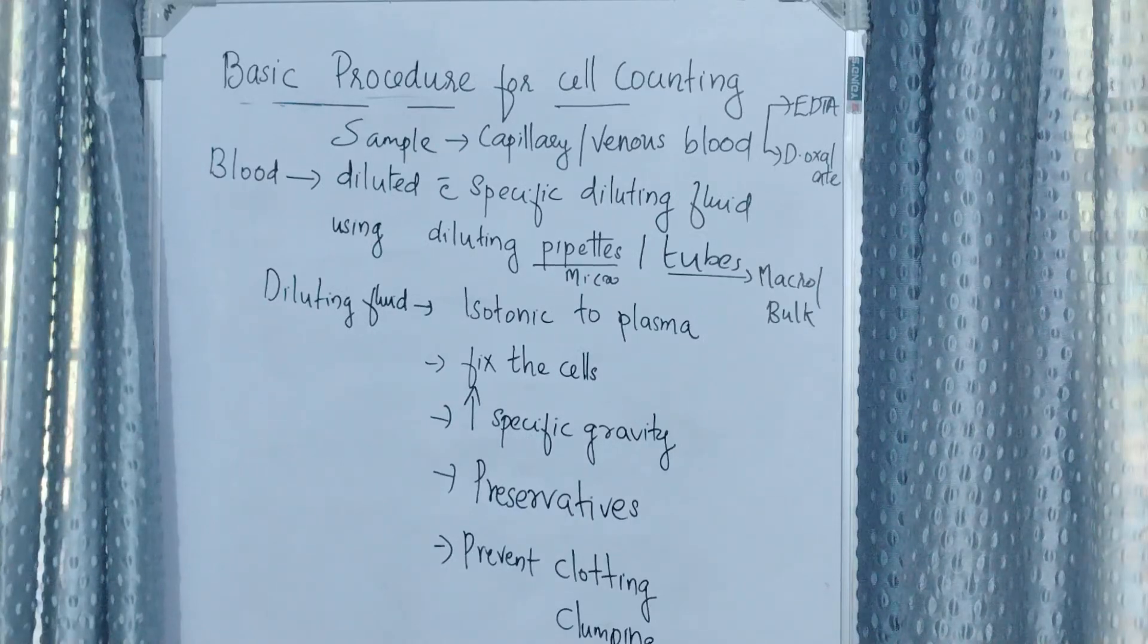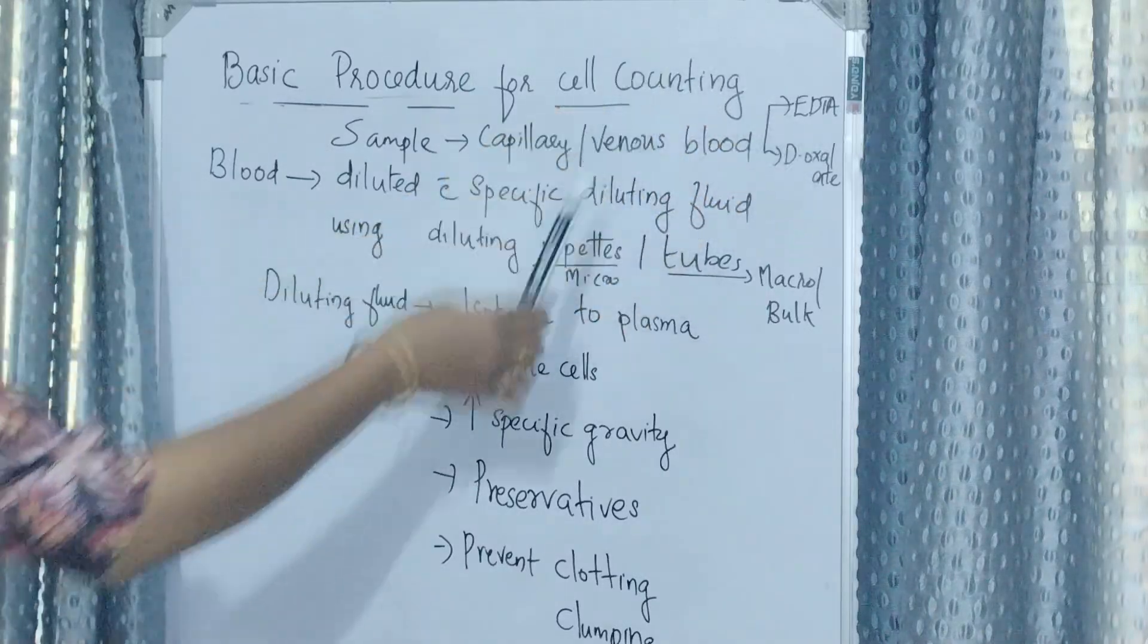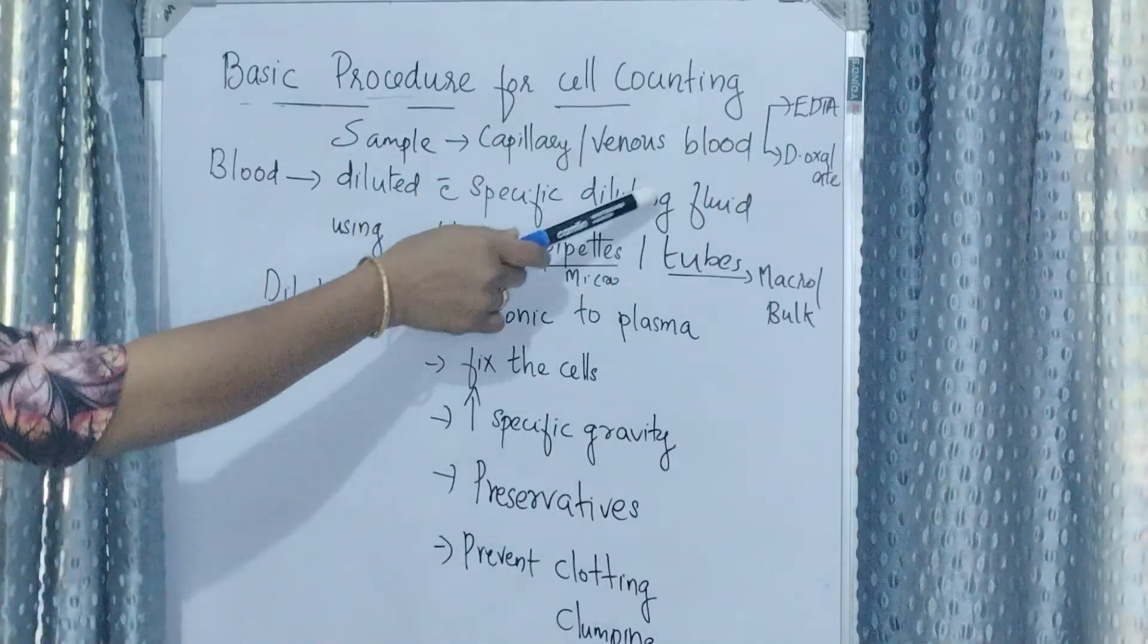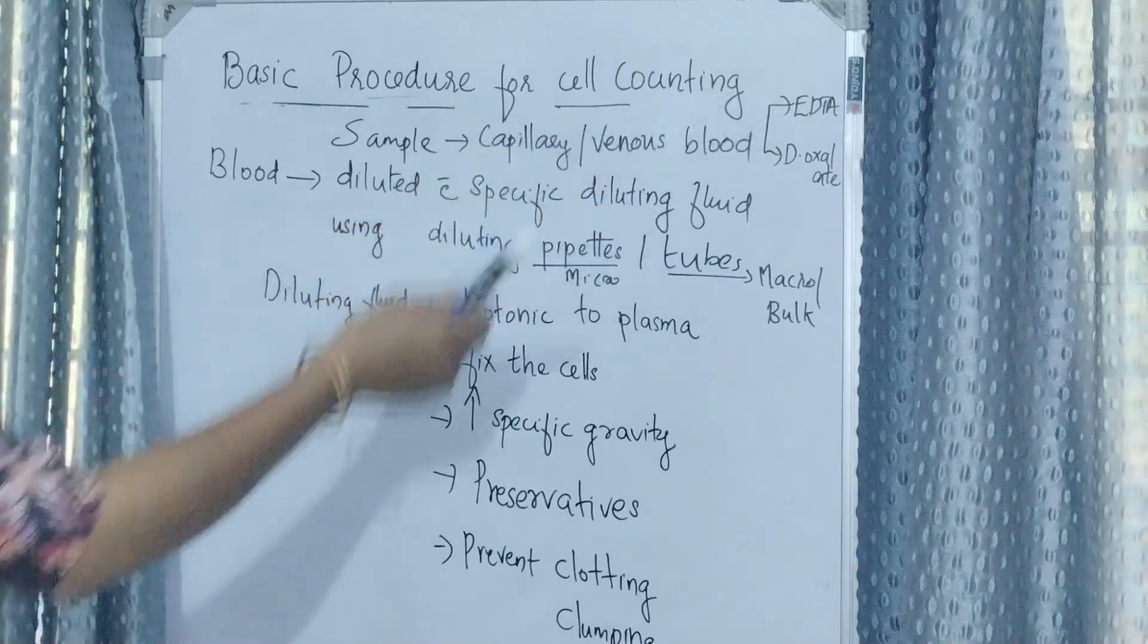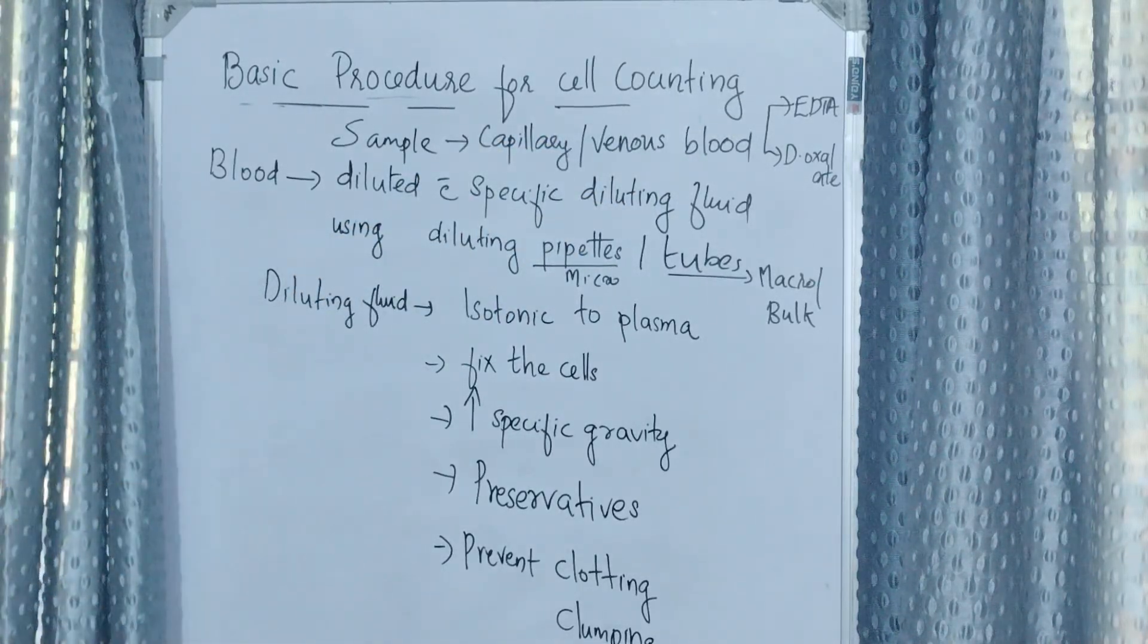The sample collected for cell counting is capillary or venous blood. If using venous blood, EDTA or double oxalate can be used. Most commonly used is EDTA anticoagulated blood. Anticoagulant in powder form only can be used for cell counting.